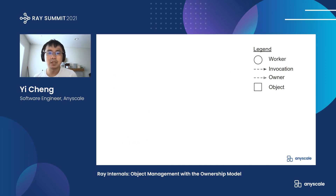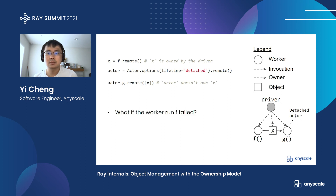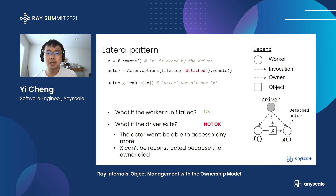Now let's check another piece of code. The driver first calls the remote function f to get object x, and now x is owned by the driver. Then the driver creates a detached actor. A detached actor is an actor that would still be alive even after the driver exits. Then the driver passes a list containing x to the detached actor. What if the worker failed? It's okay, since the driver is now the owner of x, and the function g can still access x, just like the downward pass pattern. What if the driver exits? The actor won't be able to access x anymore since the owner exits — x cannot be reconstructed due to the owner having died. So it's not okay here. We call this the lateral passing pattern, since it's passing the object across different ownership trees.